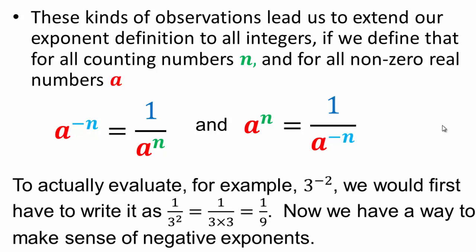If we evaluate 3 to the negative second power, that doesn't mean anything until we rewrite it. We know that 3 to the negative second can be written as 1 over 3 to the second power. So it's 1 over 3 times 3, which is 1 over 9.